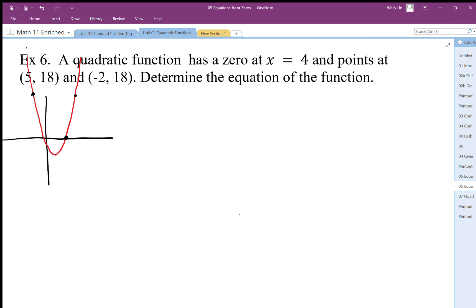For this question we've been given a zero and two points, so we have three pieces of information and should be able to piece this together. We have to decide whether we're going to use general form, the factored form, or the graphing form (vertex form). In this case, we're leaning towards the factored form because of that zero. However, notice that we do have symmetrical points here.